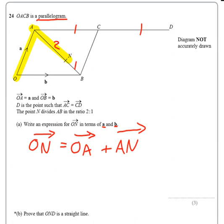Now O to A is quite straightforward. That's just going to be a. But A to N, well that's two-thirds of the vector A to B. Now A to B is going to be minus a plus b.